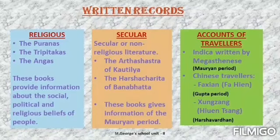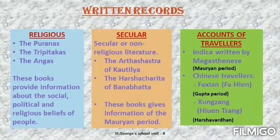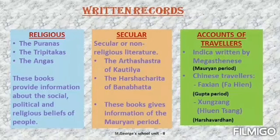These books provide information about the social structure, the political system and the religious beliefs of the people of that particular time. The second kind of written records are secular writings. Secular means non-religious, meaning nothing is related to religion. These are called secular literature and it includes stories, poems, books on laws and on society.